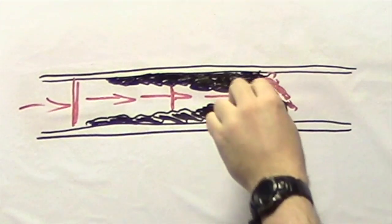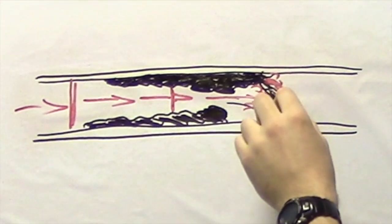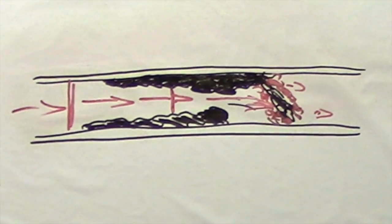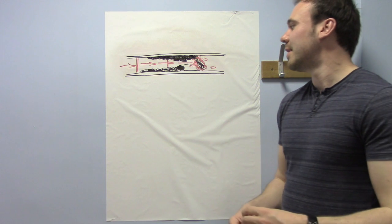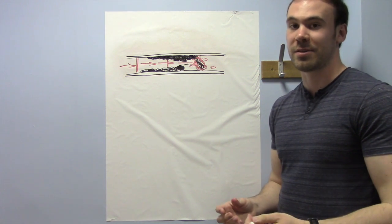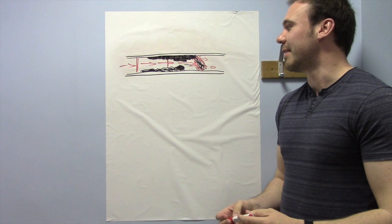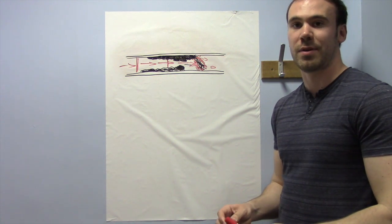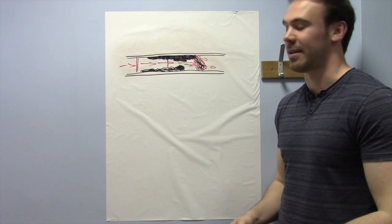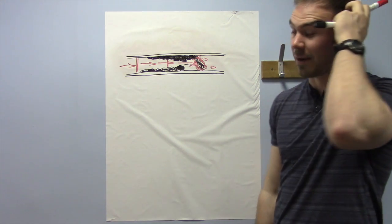And when you get a blood clot like this, blood flow is going to be completely restricted. As you can see, hardly any blood is going to manage to get through there. So if this happens to vessels in the brain, you're going to get a stroke. And if it's vessels that supply the heart or are in direct contact with the heart, then you're more than likely to have a heart attack if you get a blood clot like this in the arteries.